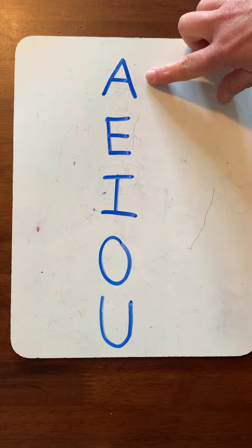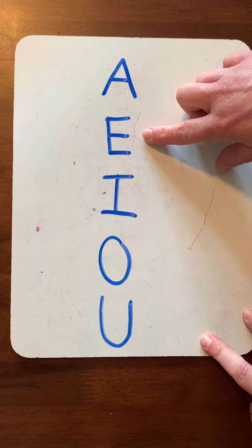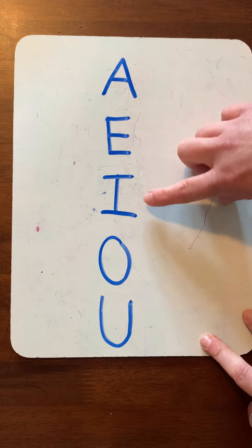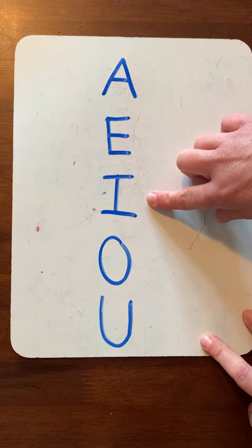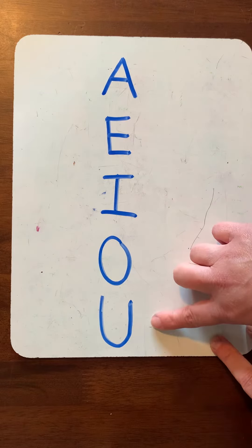So A says /æ/. Let's all say that one. /æ/. E says /ɛ/, I says /ɪ/, O says /ɑ/, U says /ʌ/.